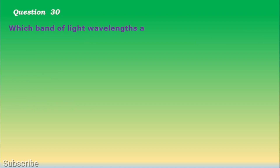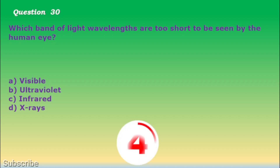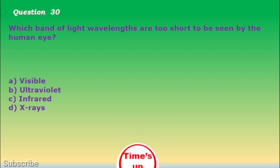Question number 30. Which band of light wavelengths are too short to be seen by the human eye? a. Visible, b. Ultraviolet, c. Infrared, d. X-rays. The correct answer is letter b. Ultraviolet.